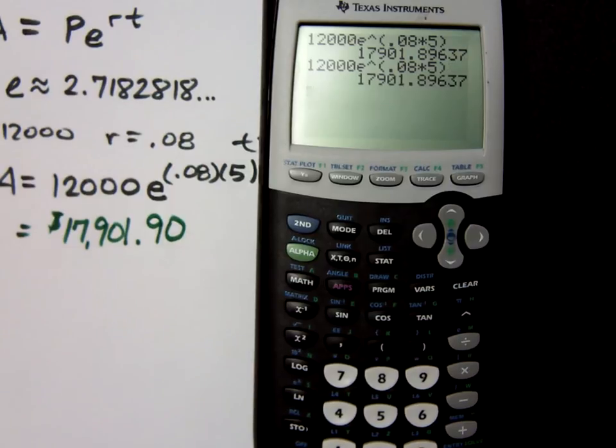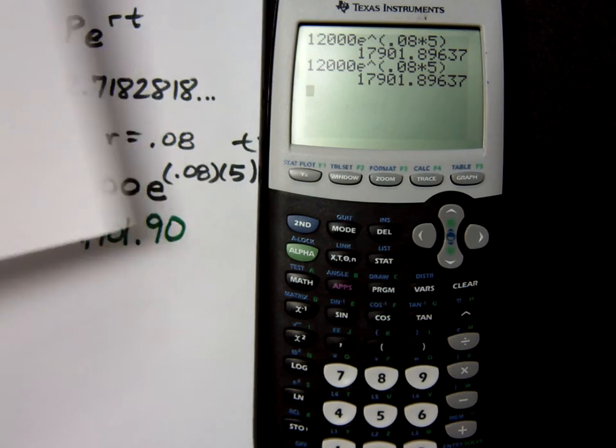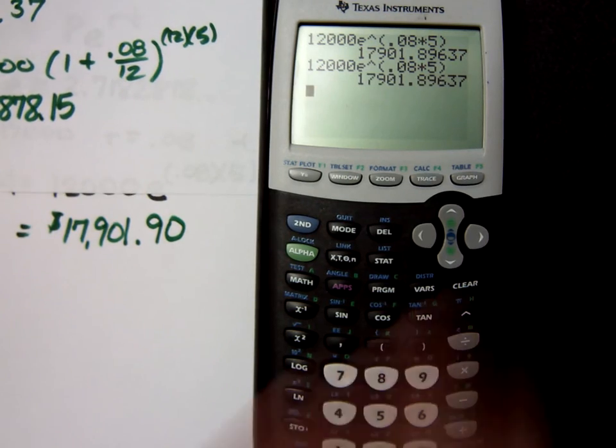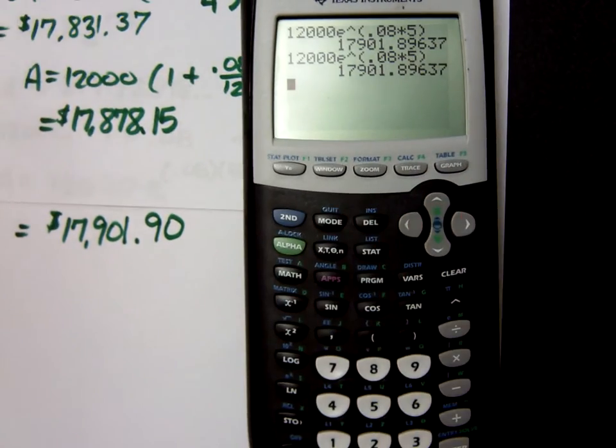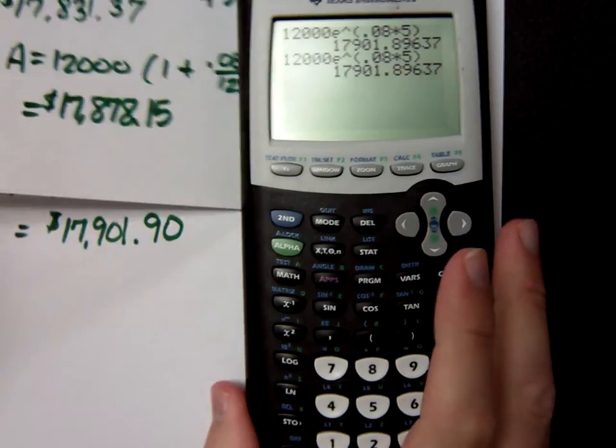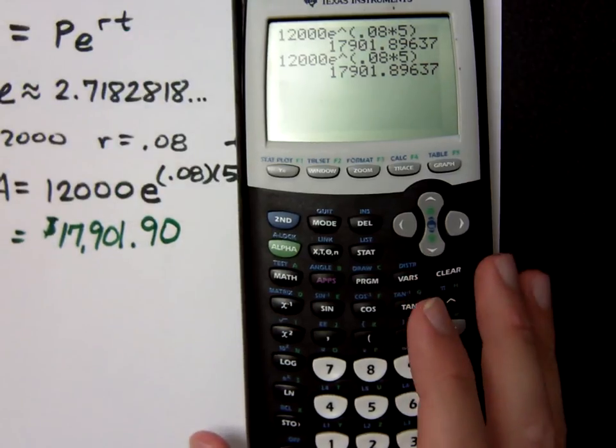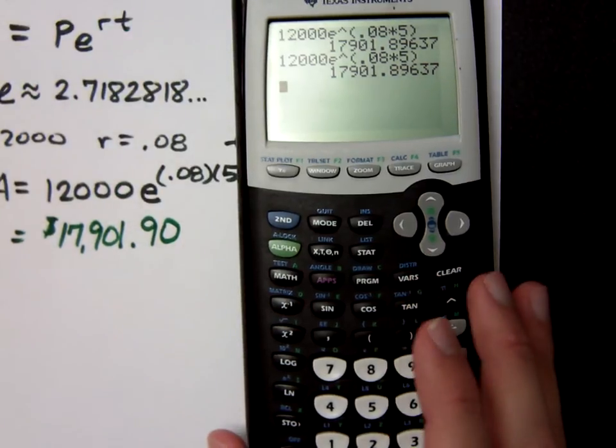So, you see, with continuous compounding, I earn even more money. You may say, well, the difference between $17,878 and $17,901, that's not that big of a difference, right? That's only in five years. Well, it's in five years. But it can be significant, though, right? If the number's large enough, that can be very significant. So, that's continuous compounding.